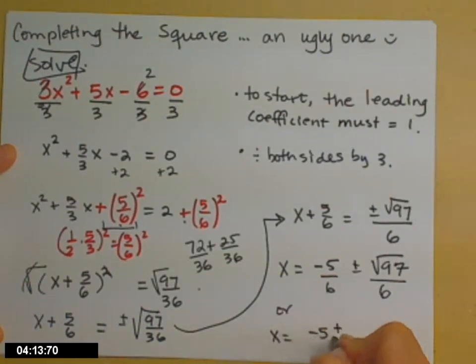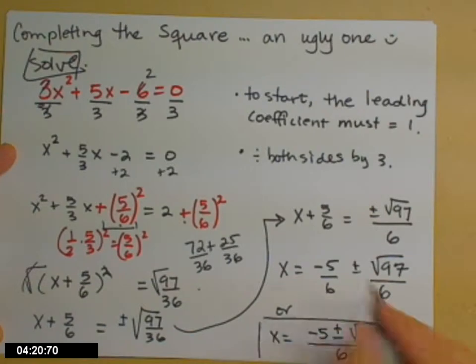Or you might write that negative 5 plus or minus the square root of 97 over 6 since they have the same denominator. Either one of those is an appropriate answer.